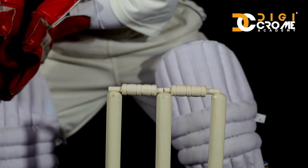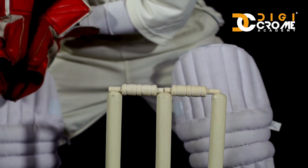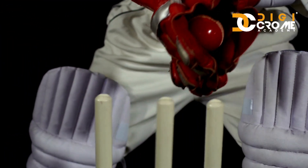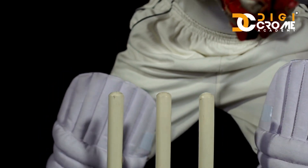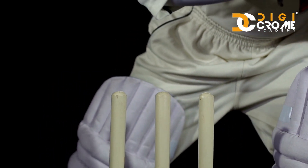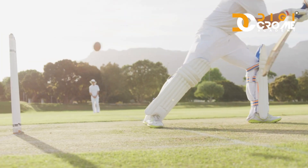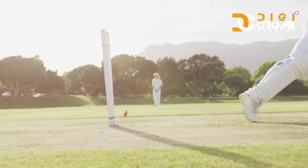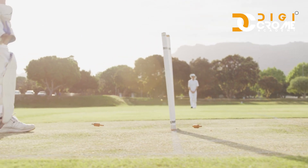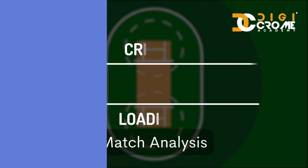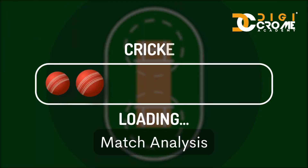The Duckworth-Lewis method is a relatively older method but still finds relevance in today's game. It is a mathematical rule used to find out results in games that are interrupted by rain or other unavoidable factors in the limited-overs format. This method takes two key factors into account: the number of overs remaining in the match and the number of wickets lost by the chasing team.